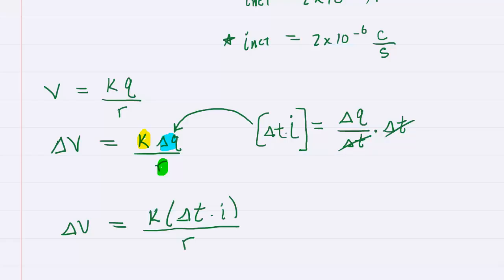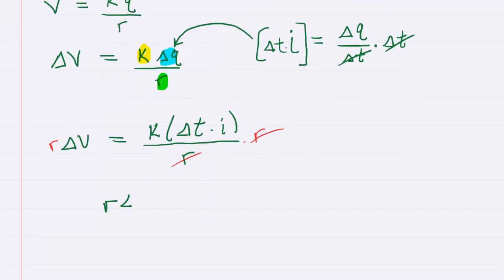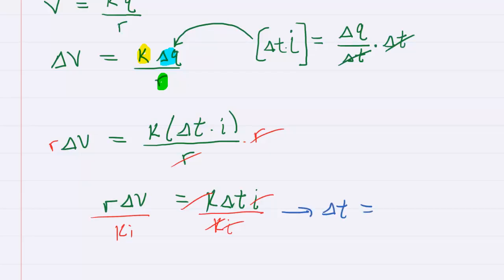Now, the question wants us to figure out how long this is going to take. So we're looking for delta T. So why don't we continue a little bit of algebraic maneuvering here. We'll multiply both sides of the equation by the radius of the sphere. So now we have R delta V equals k times delta T times I. And finally, to solve for delta T, we'll divide both sides of this equation by ki. So the k's cancel, the i's cancel. And now we can see that the time interval is going to equal R delta V divided by the constant k times the current.